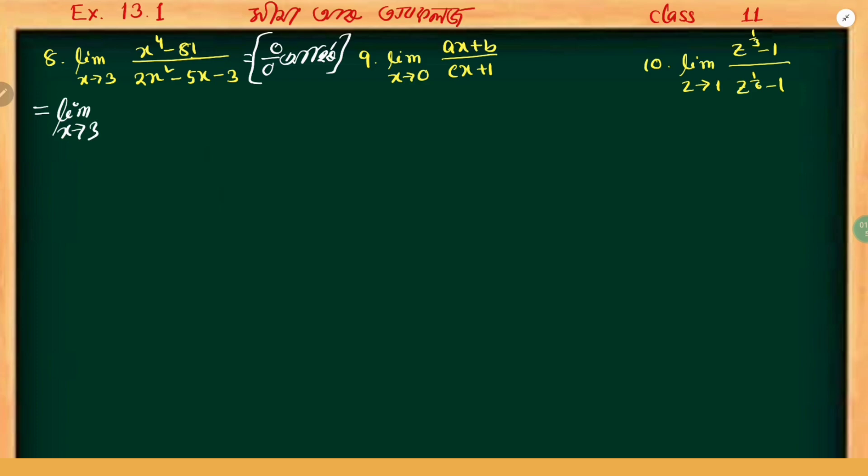We can write the limit as x tends to 3. X to the power 4 can be written as x squared whole squared minus 81. This gives us 2x squared minus 6x plus x minus 6x plus 1. So we get minus 6x plus x, which equals minus 5x.